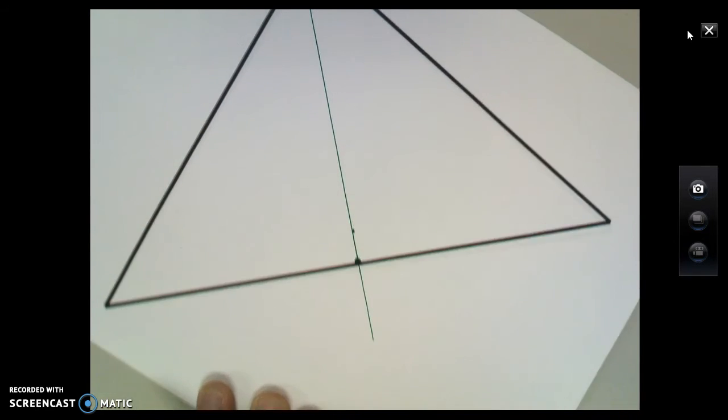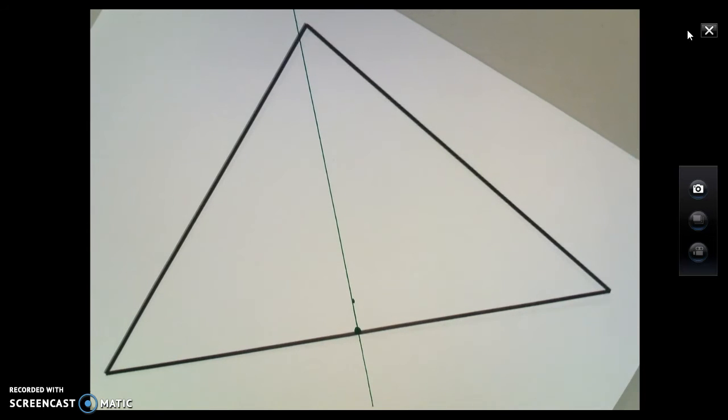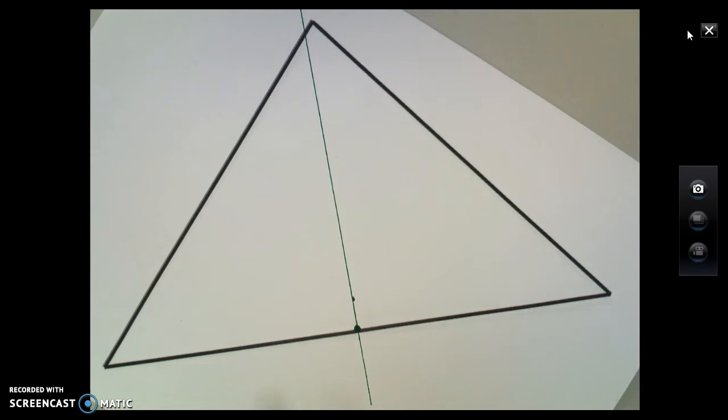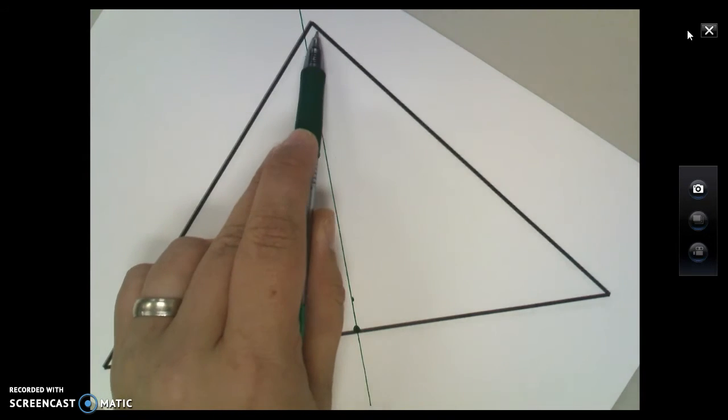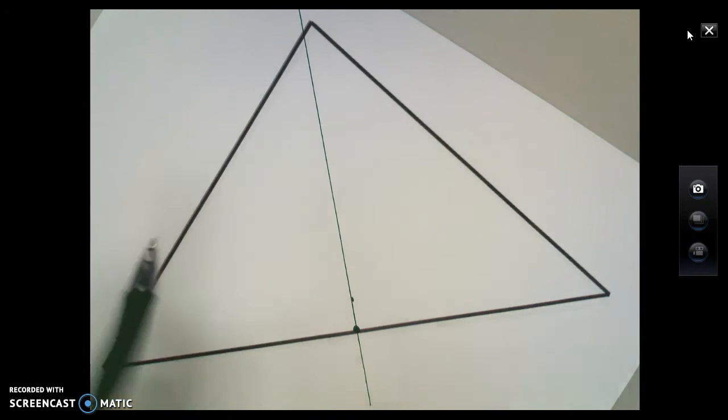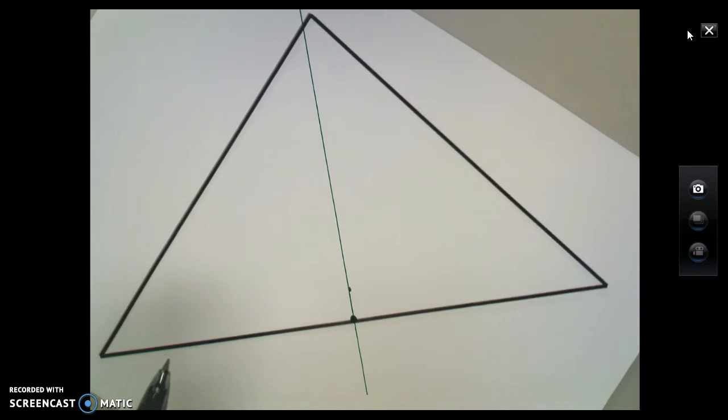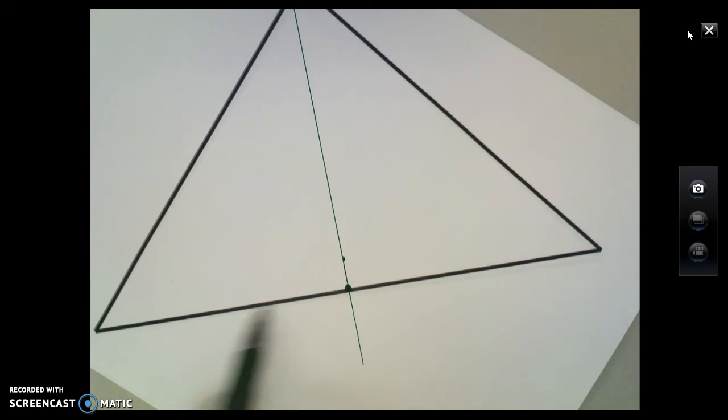So this right here, this green line that I've drawn in, is the perpendicular bisector. Note that it does not have to go through the opposite vertex to be considered a perpendicular bisector. The only requirements are that it must bisect the side and it must be perpendicular.